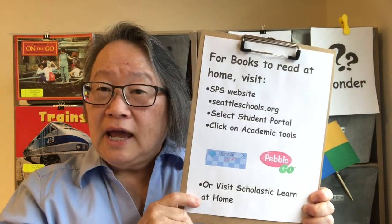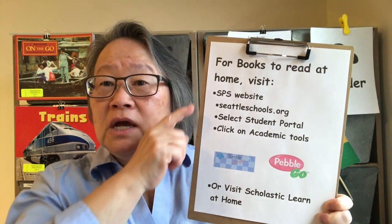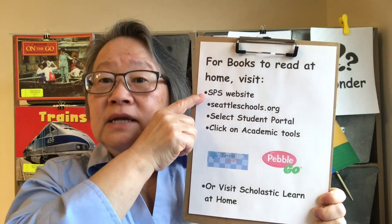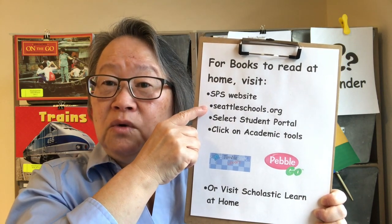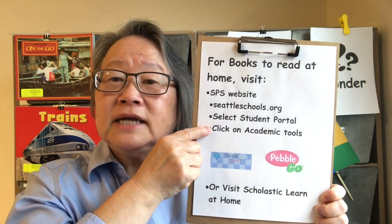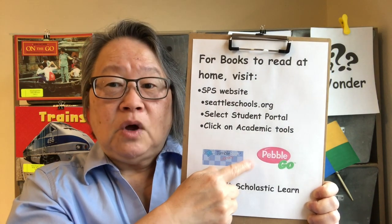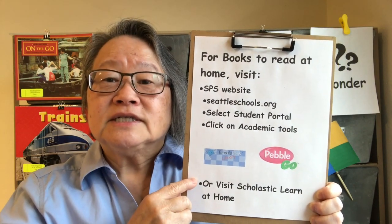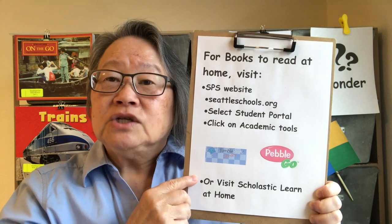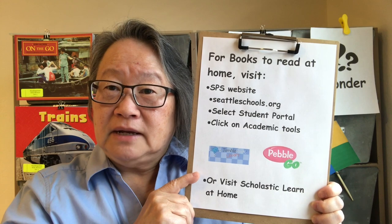If you do not have nonfiction books at your house, go to the Seattle Public Schools website at seattleschools.org, select the student portal, and click on Academic Tools. You might go to the Tumble Books Library or to Pebble Go. You can also visit Scholastic Learn at Home to get nonfiction books for your independent reading. Thanks for joining us today and we'll see you next time.